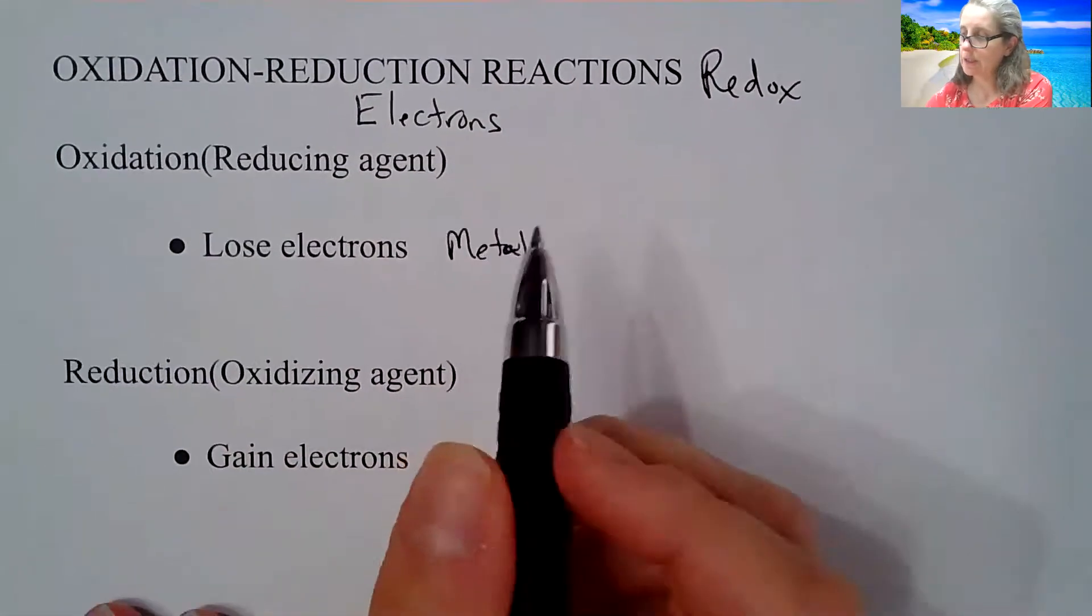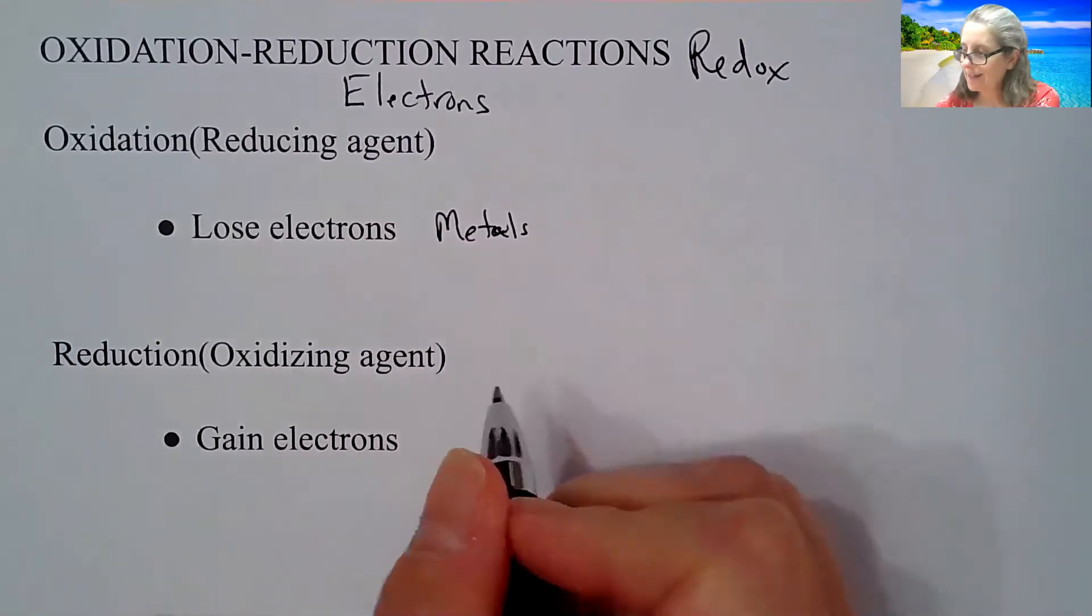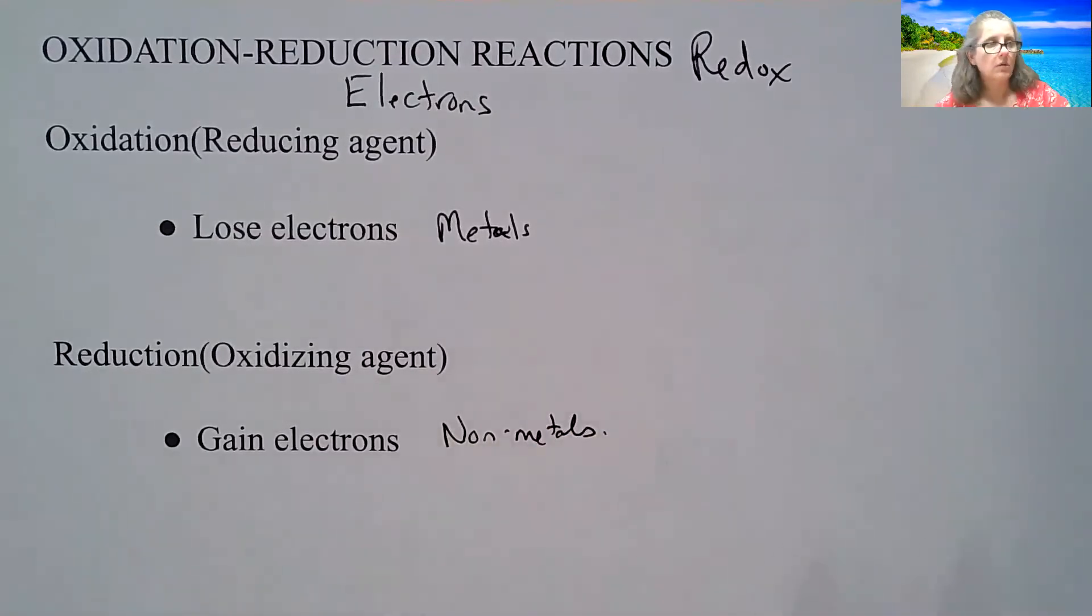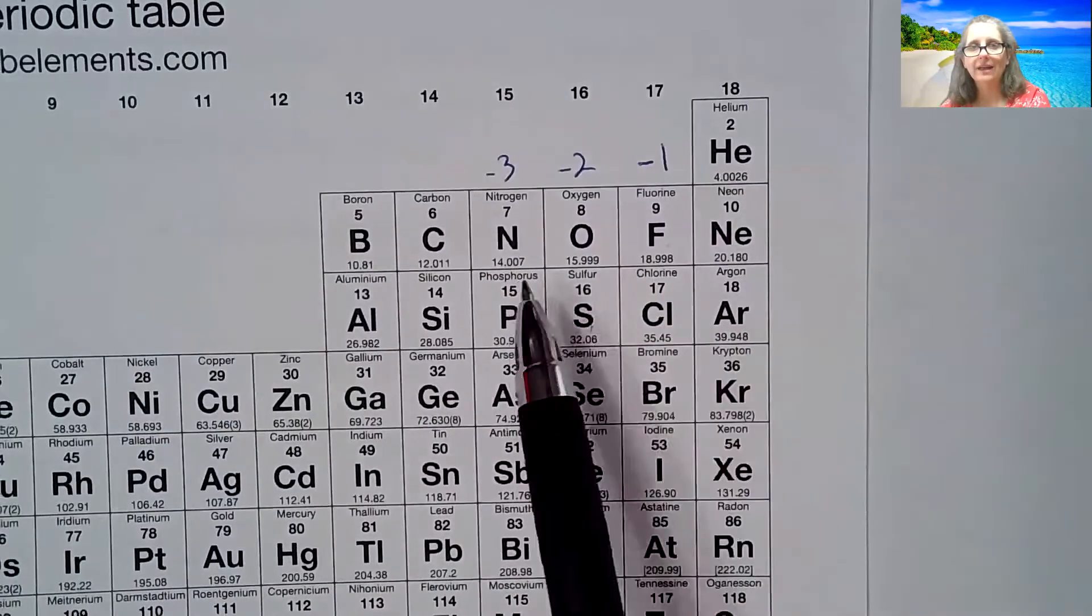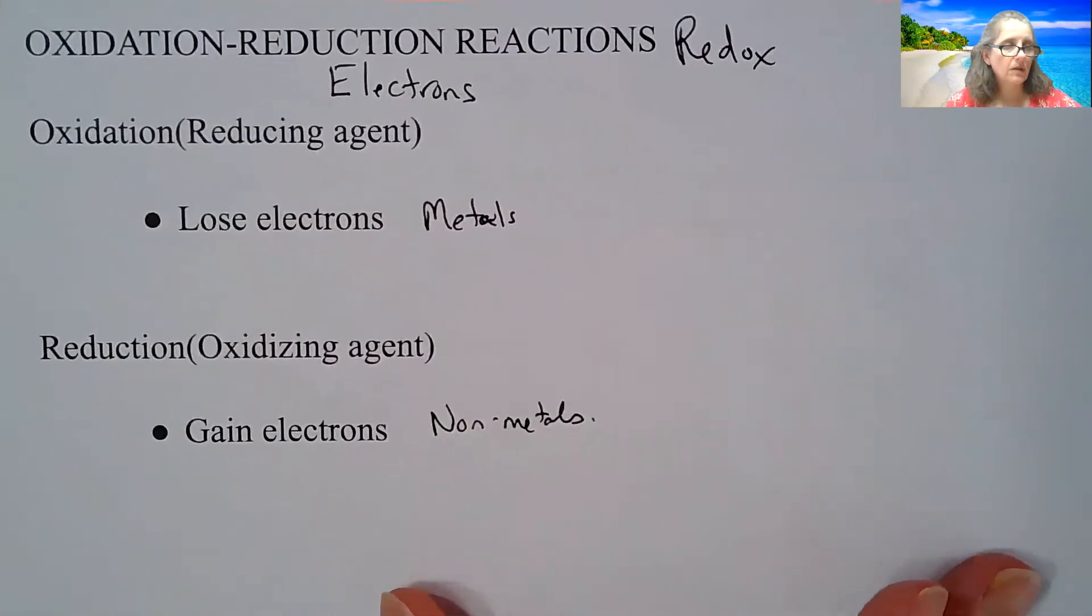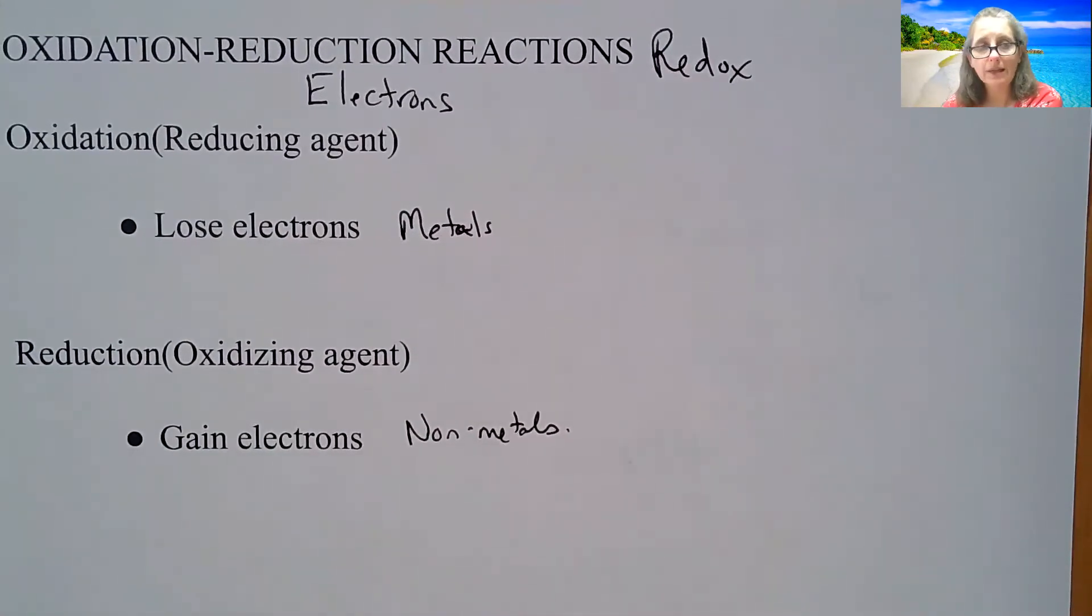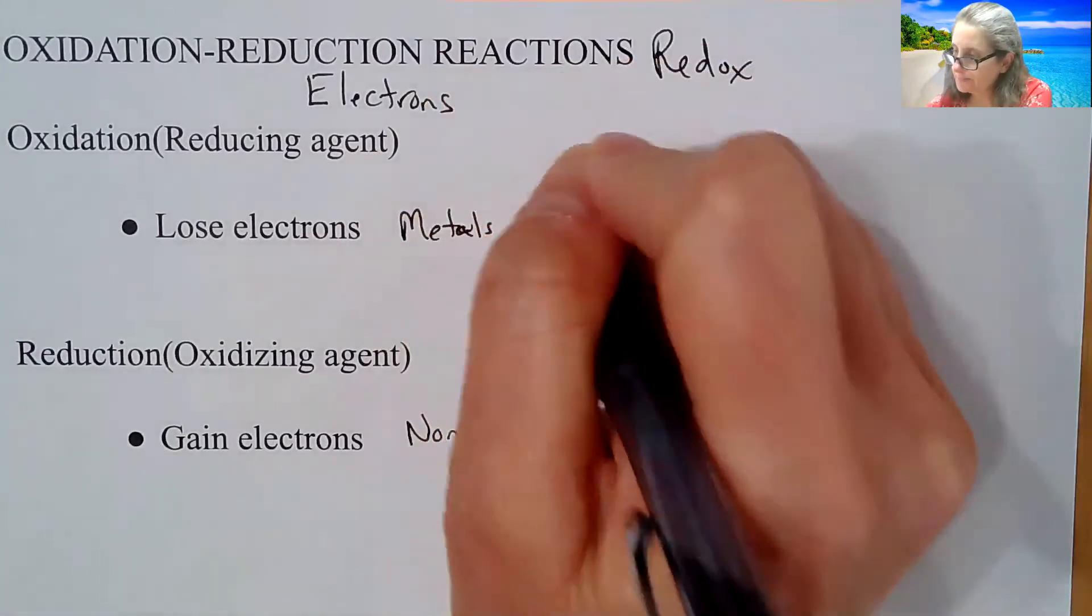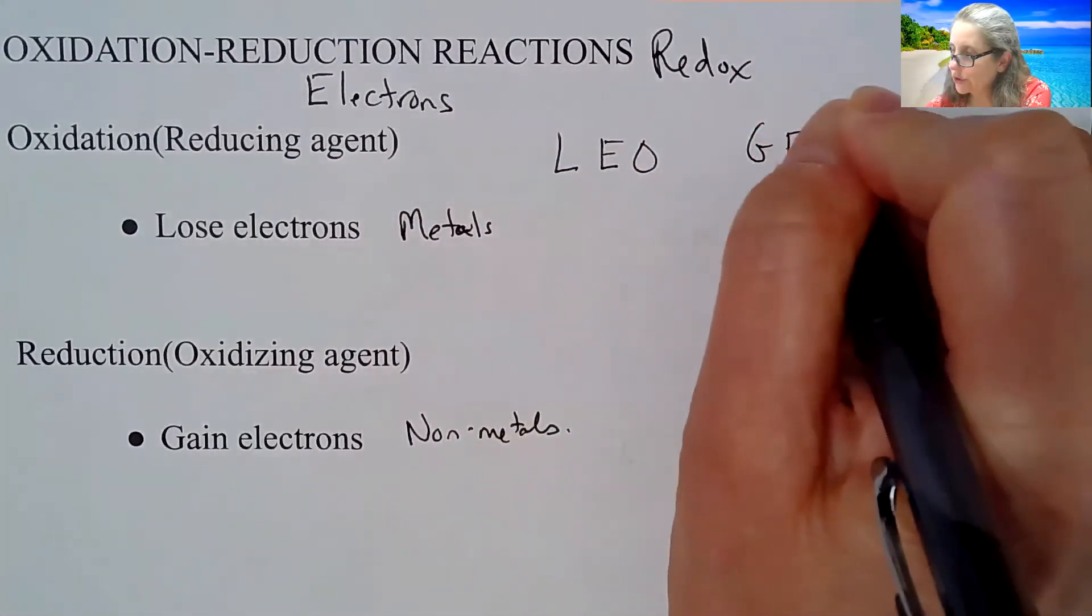So reduction, oxidizing agent, again, that will be explained to you, you're gaining electrons. Those are going to be your non-metals. So over here on the right, they want to gain electrons in order to become a noble gas configuration. So there is a silly way of memorizing: oxidation is losing electrons, reduction is gaining electrons. One is called Leo the lion goes ger. Leo is the astrological name of the lion.